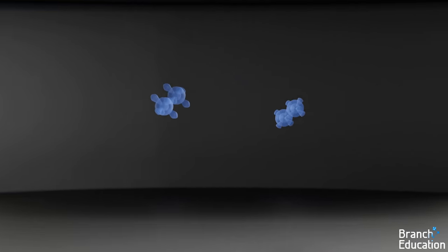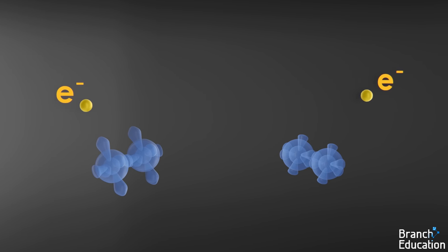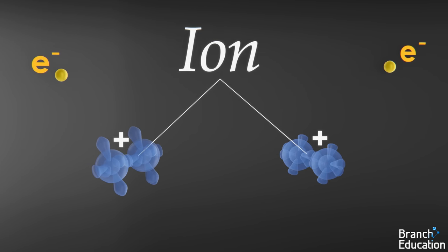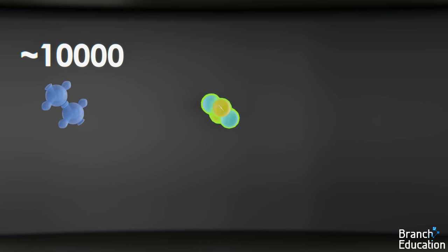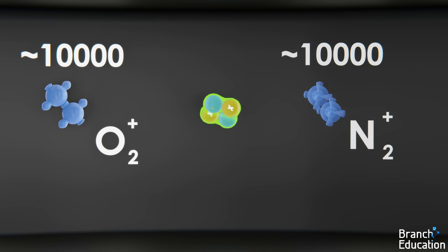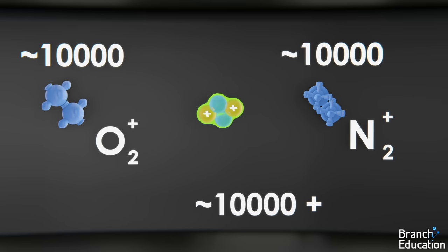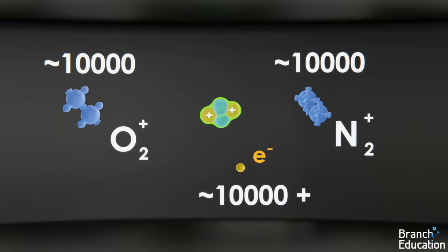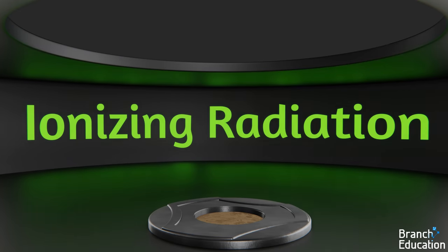Note that any atom or molecule that has lost or gained an electron is charged and thus called an ion. In fact, a single alpha particle has enough energy to create around 10,000 positively charged oxygen and nitrogen ions and tens of thousands of electrons. This process is called ionizing radiation.